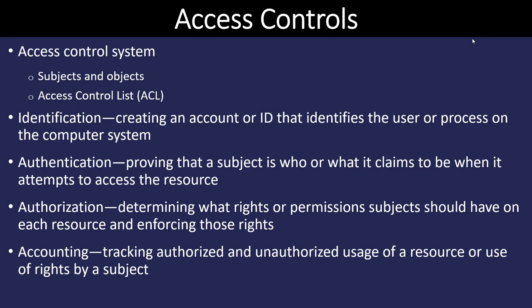When we make that list of what objects a subject can use, we're going to call that an access control list. The four main processes in creating an access control system are: identification — we have to have an account or ID that verifies the user; authentication — proving that the subject is who or what it claims to be; authorization — the rights and permissions the subjects should have to use those objects and enforcing those rights; and accounting — tracking the authorized and unauthorized usage of a resource, sometimes called auditing, usually done with a log file.